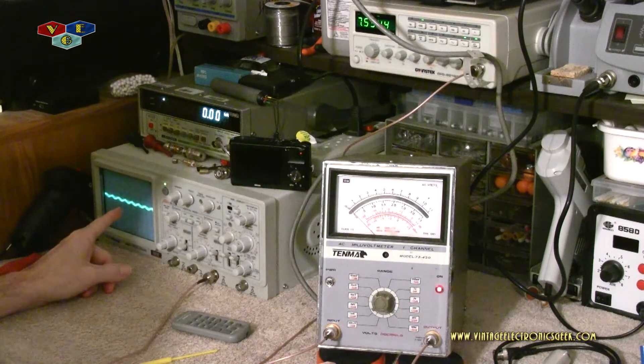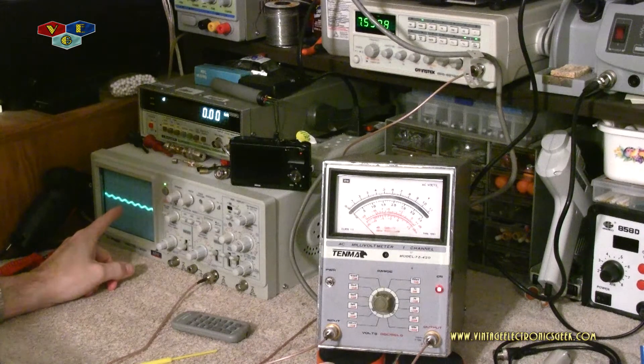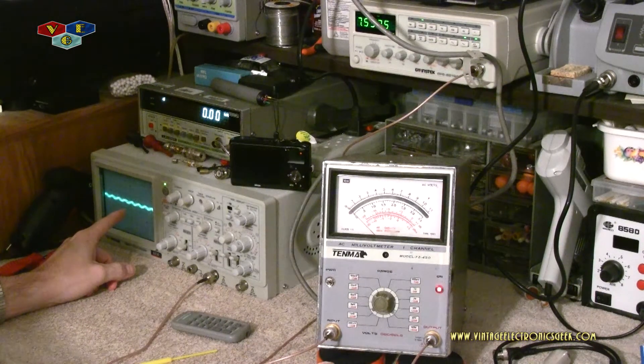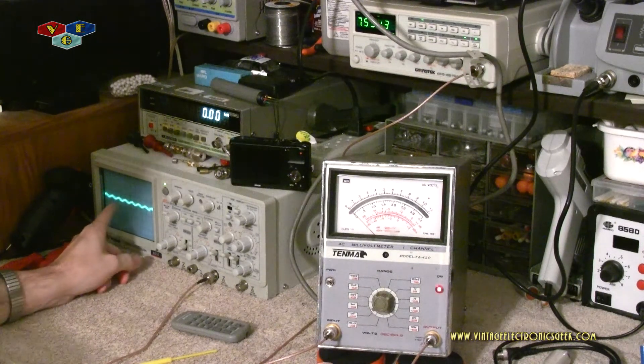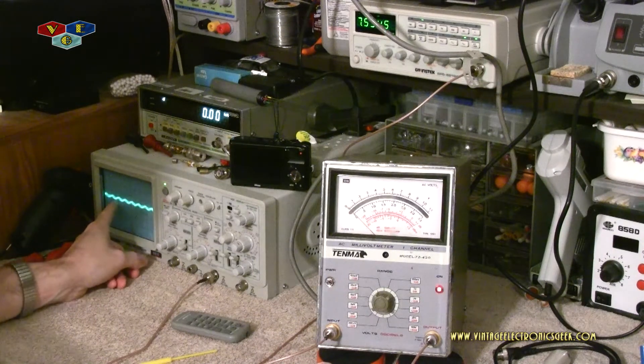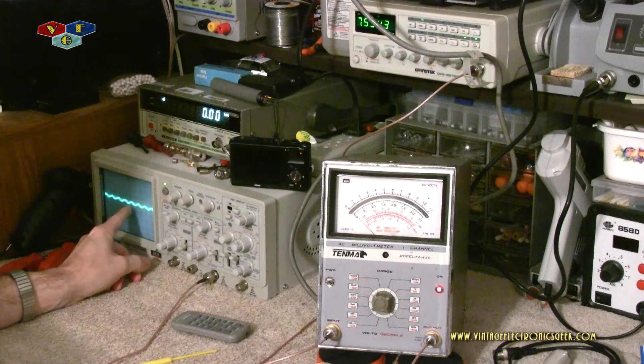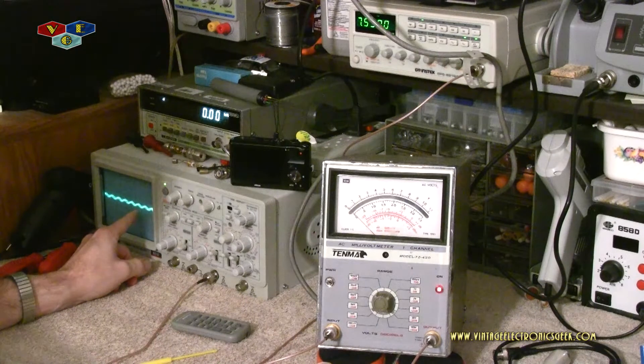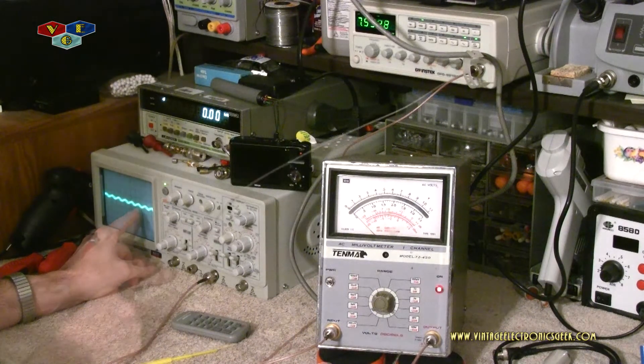So you see on the scope I've got something barely. Now on your end that looks like I have a signal, and I do. On my end that's really fuzzy which is telling me really, really low power.